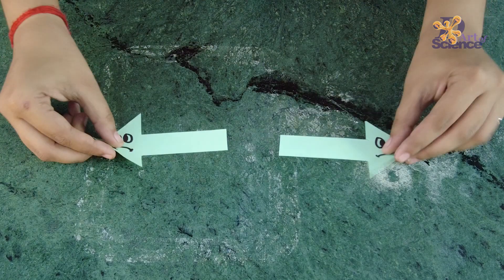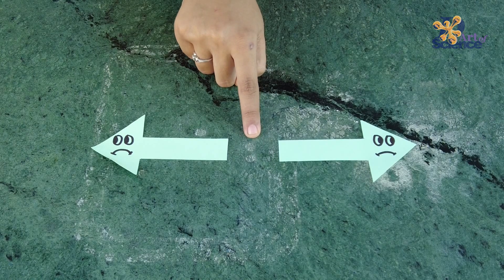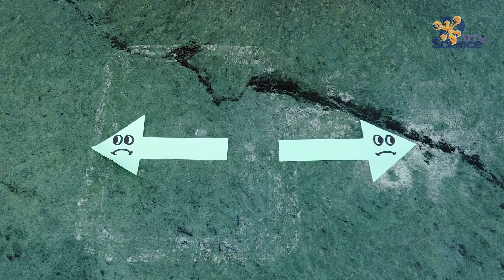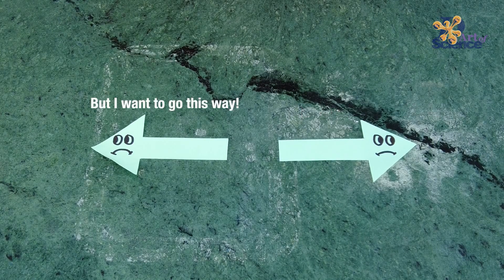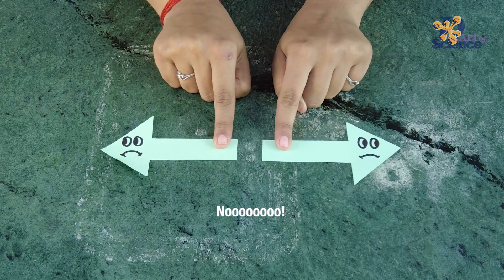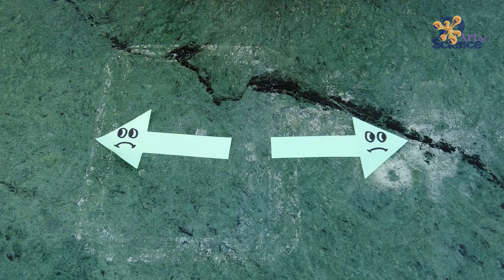A magnet, as you know, has two poles, the north pole and the south pole. So, assume that these are two magnets with their like poles aligned. Hey, I want to go this way. But I want to go this way. Nooooooo! See, they repel each other.